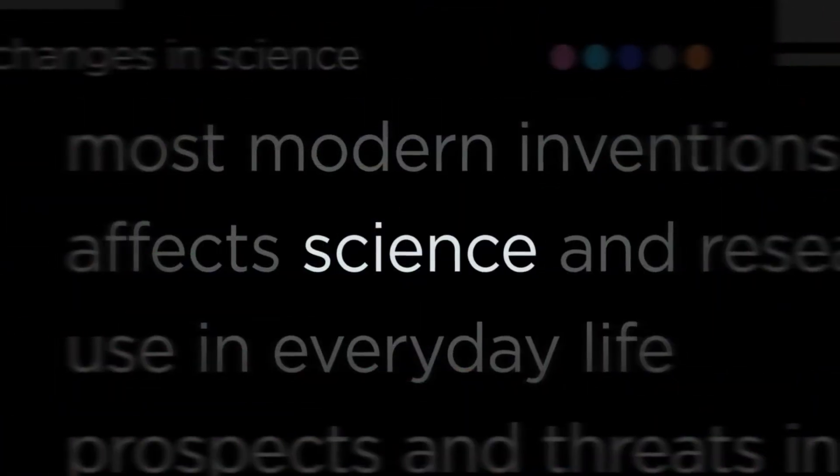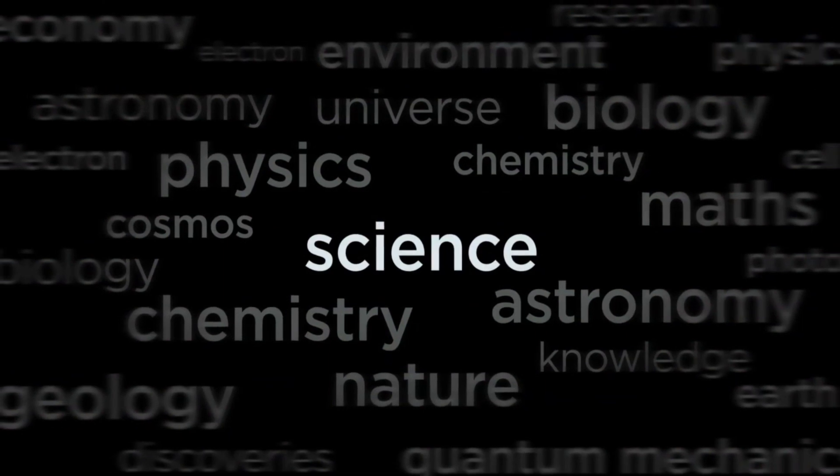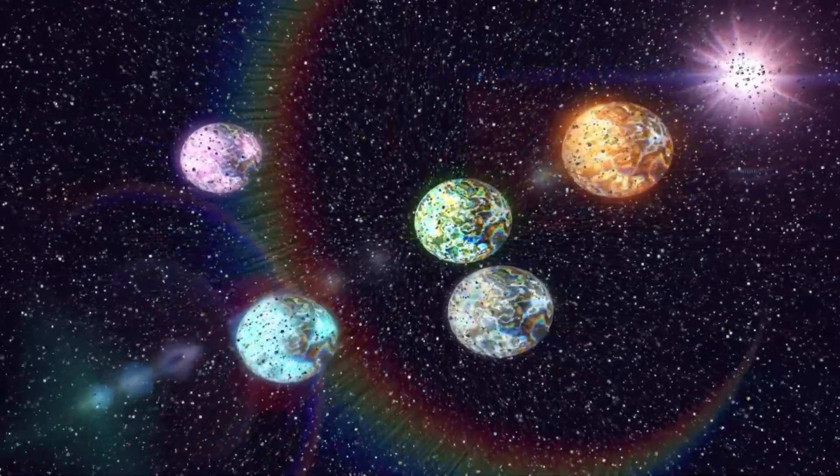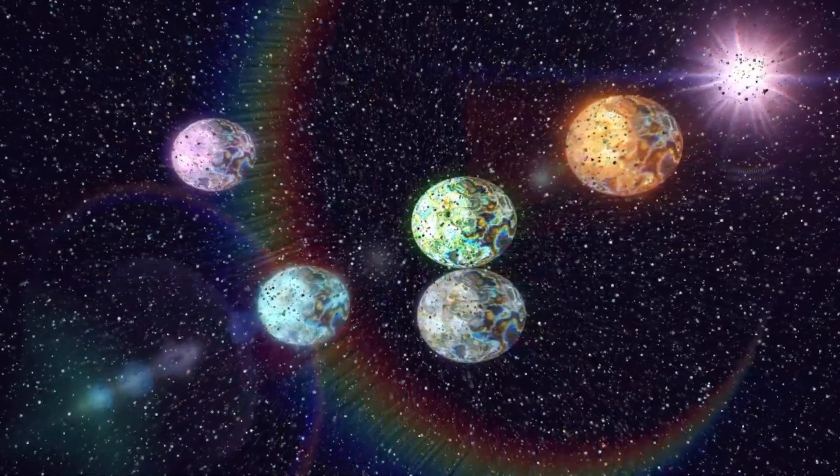To investigate this, scientists use a technique called gravitational lensing. This occurs when massive objects like galaxy clusters bend the light from even more distant galaxies behind them.